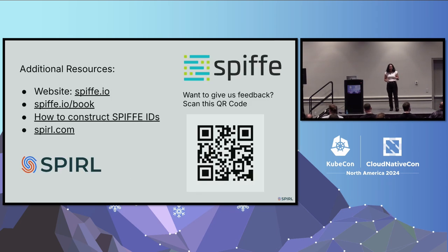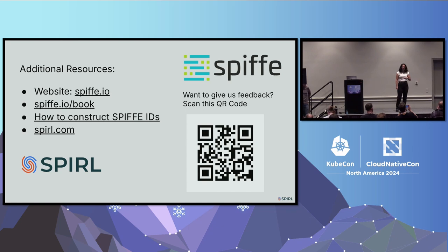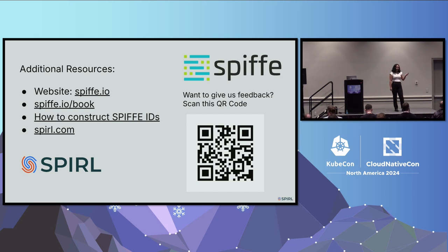That's everything for now. We have some additional resources: check out the SPIFFE website, spiffe.io/book for the free PDF book Eli co-wrote that goes in depth into zero trust networks. We also have a blog post about how to construct SPIFFE IDs on the Spirent website. Check out our new Spirent website that we just launched this week. And if you want to give feedback on this session, there's a QR code. Thanks everyone!